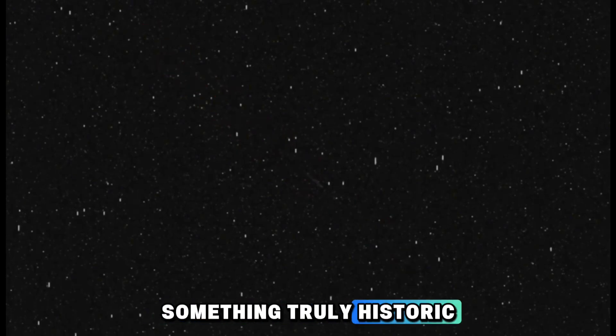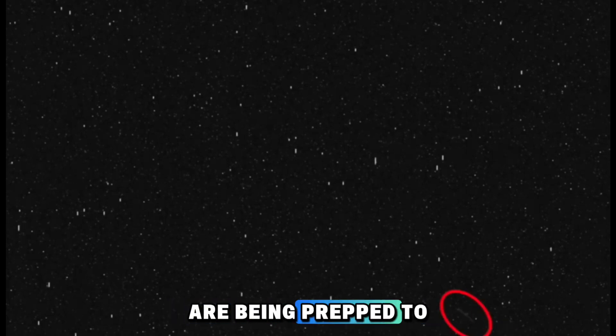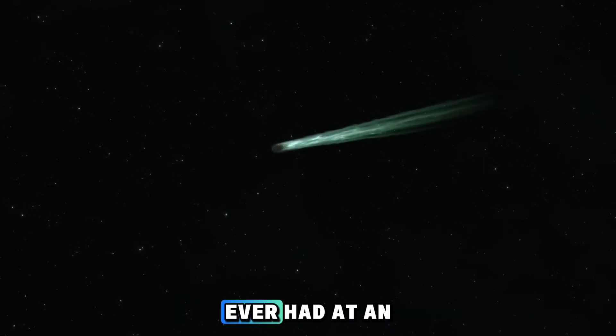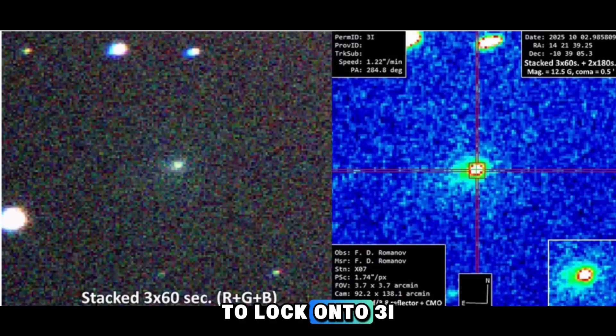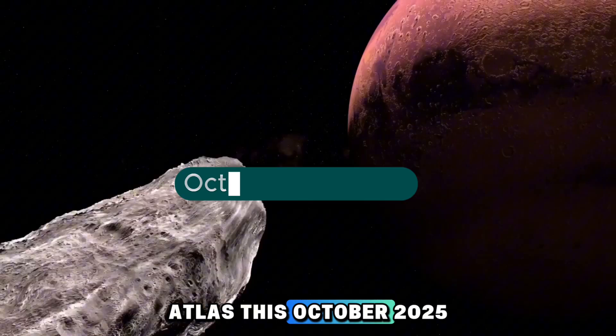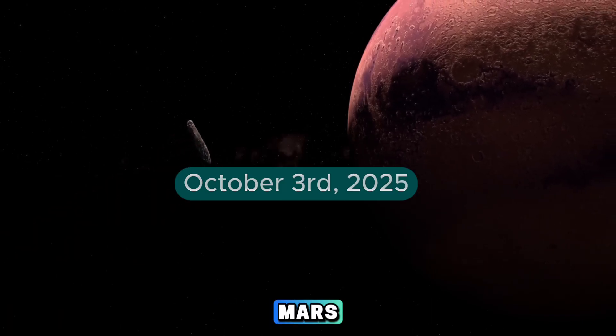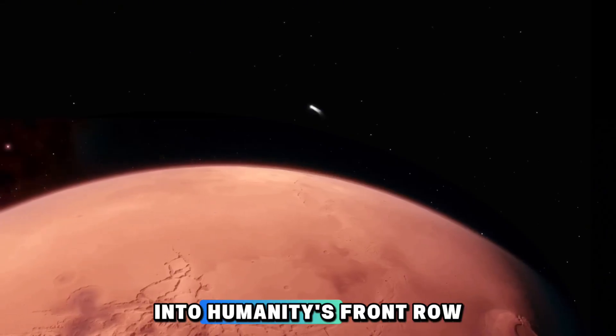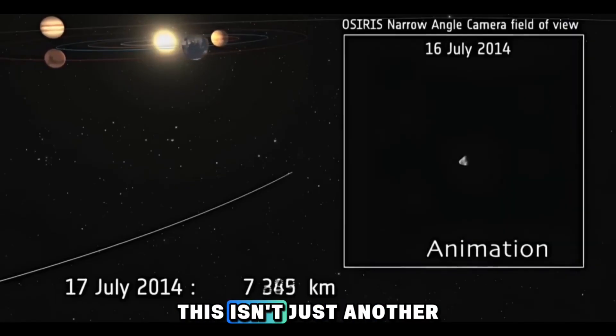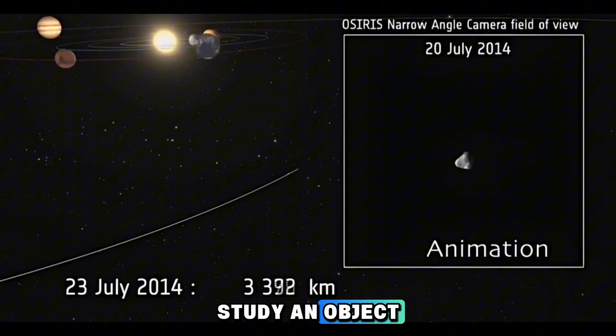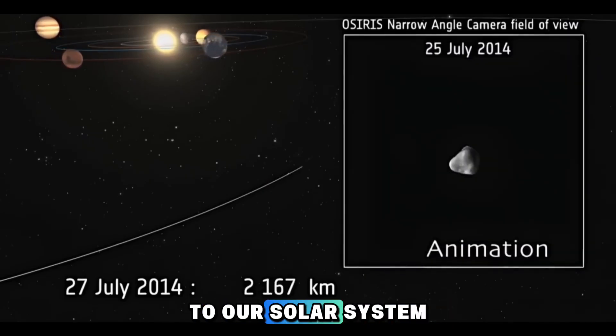The countdown is officially on. The European Space Agency is gearing up for something truly historic. Mars Express and the ExoMars Trace Gas Orbiter are being prepped to capture the closest, most detailed look we've ever had at an interstellar object. These spacecraft are set to lock onto 3I Atlas this October 2025, as it drifts past Mars, turning the red planet into humanity's front-row seat for a once-in-a-lifetime show. This isn't just another flyby. It's our chance to study an object that doesn't even belong to our solar system.